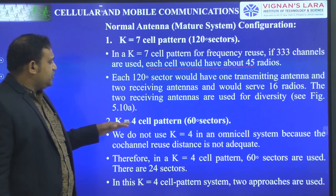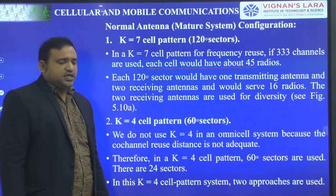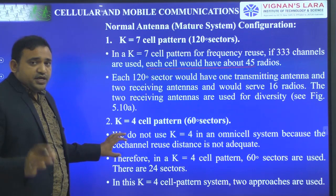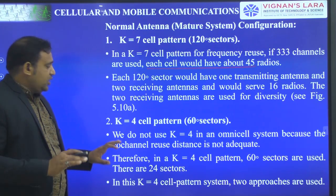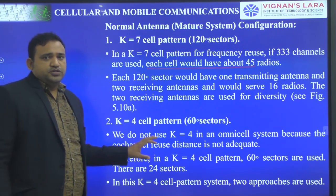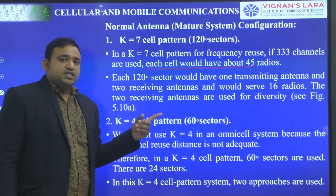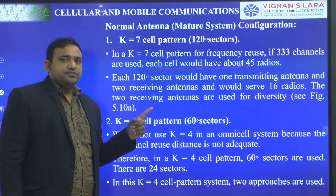Next, considering the K equal to 4 cell pattern, that is the 60-degree sector. We have already studied in Unit 2 that we are not considering a K equal to 4 system in an omnidirectional antenna because the C/I value is less than 18 dB.